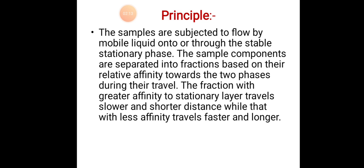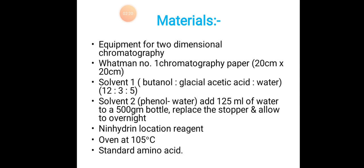Materials required: Equipment for two-dimensional chromatography, Whatman No. 1 chromatography paper 20cm x 20cm, Solvent 1: butanol, glacial acetic acid, water in the proportion 12:3:5, Solvent 2: phenol water - add 125 ml of water to 500 grams bottle, replace the stopper and allow to overnight, ninhydrin location reagent, oven at 105°C, standard amino acids.